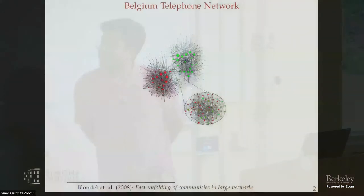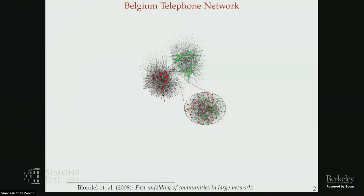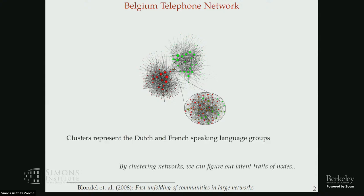Especially when you have missing data on the network. Let's start with a classical example related to clustering and latent structure recovery on networks. This is the Belgium telephone network, where edges represent people calling each other and nodes are people. You can see there are clearly two separated clusters, which represent the two largest linguistic groups in Belgium: the Dutch-speaking and French-speaking populations.